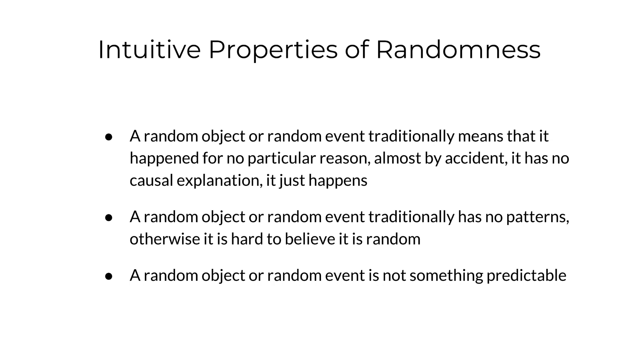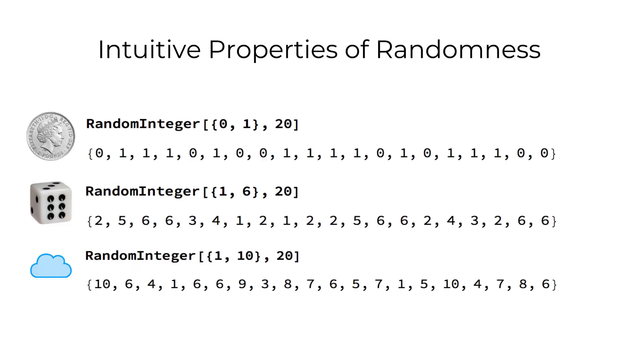One common useful strategy to study randomness is to study random and non-random sequences. For example, the result of tossing a coin can be encoded in binary as a binary sequence.